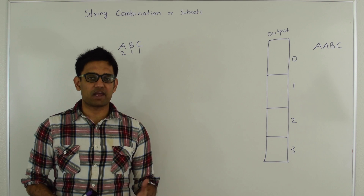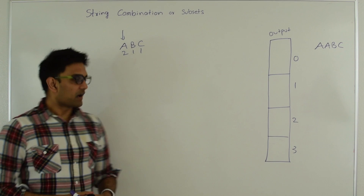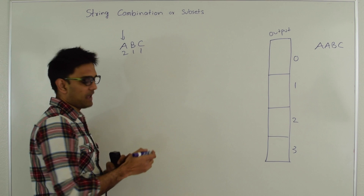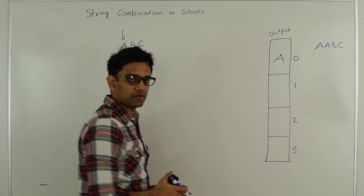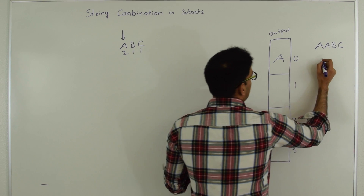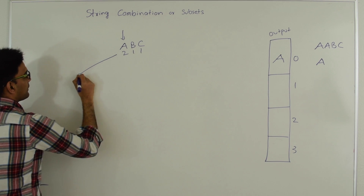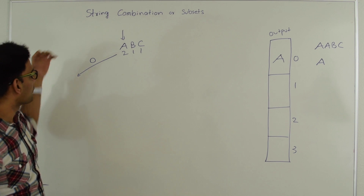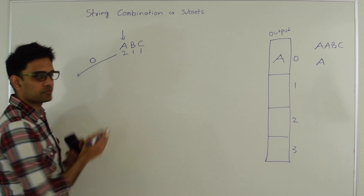It really helps to visualize recursion as a tree, so that is what we are going to do with the example AABC. Starting from the leftmost element we look for the first character whose count is greater than 0 — that character is A. So first thing we do is put A into the output array. Since we are at the 0th level of recursion we put it in the 0th element and print the contents of the output array till index 0, printing A. Then we go into the recursion, passing index 0 meaning look for the first available character from index 0 onwards, and we decrement the count of A because we used one instance of A.